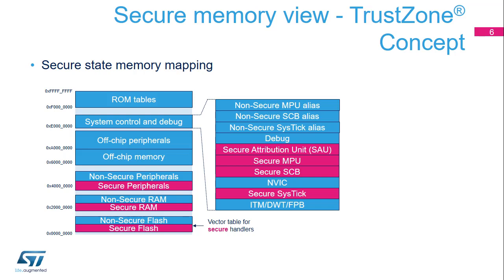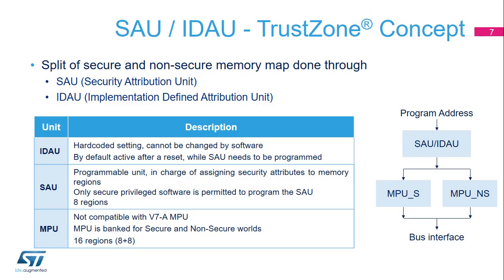Secure software can therefore access secure and non-secure instances of these units. Privileged secure software assigns the security to memory regions by programming the Secure Attribution Unit (SAU). Two units determine the security attribute of memory regions: the SAU which is programmable, and the Implementation Defined Attribution Unit (IDAU) which is hard-coded. When SAU and IDAU provide different settings for the security attribute, the most conservative one is selected.